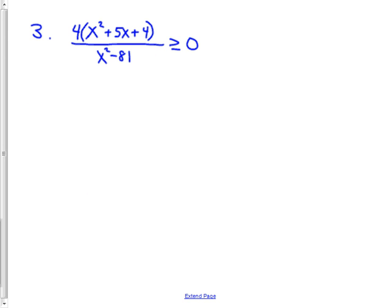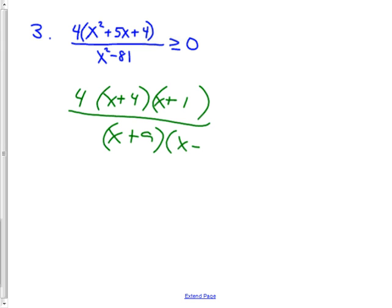This one. If you can factor it, you should. So you go 4 and you got (x+4)(x+1) all over (x+9)(x-9). This is why I pushed factoring so hard early in the year because I can use it all the time now. If you aren't good at basic factoring, you're toast.